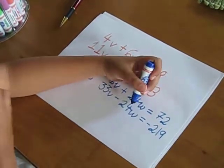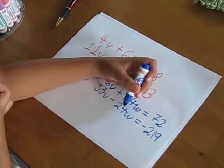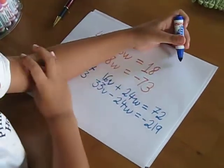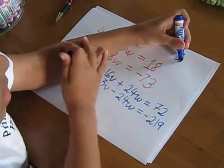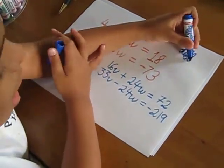We have the same number of w's, but the signs are different. When the signs are different, we add.